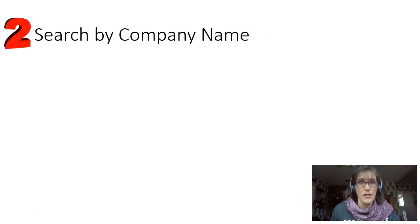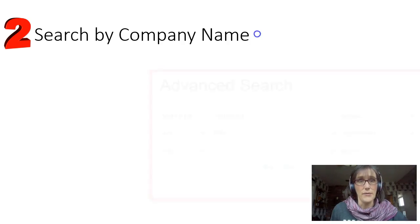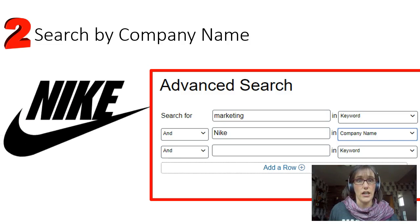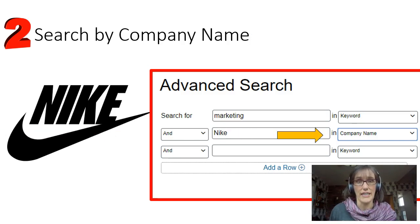The second principle is to know that all of these databases can filter and search by company name. This is perhaps one of the greatest assets in searching a business database. Sometimes this feature is in the advanced search option. For example, if you're looking for articles about Nike's marketing strategy, you could just type in keywords like Nike and marketing. Or you can go to the advanced search and type marketing as a keyword and Nike in the company name field. This strategy will immediately narrow your results, and all of the business databases have the search by company option.